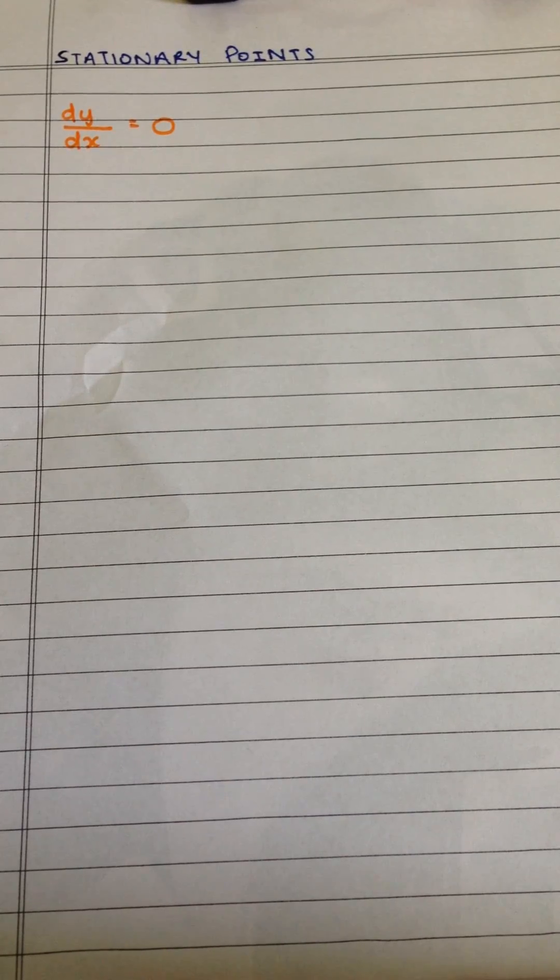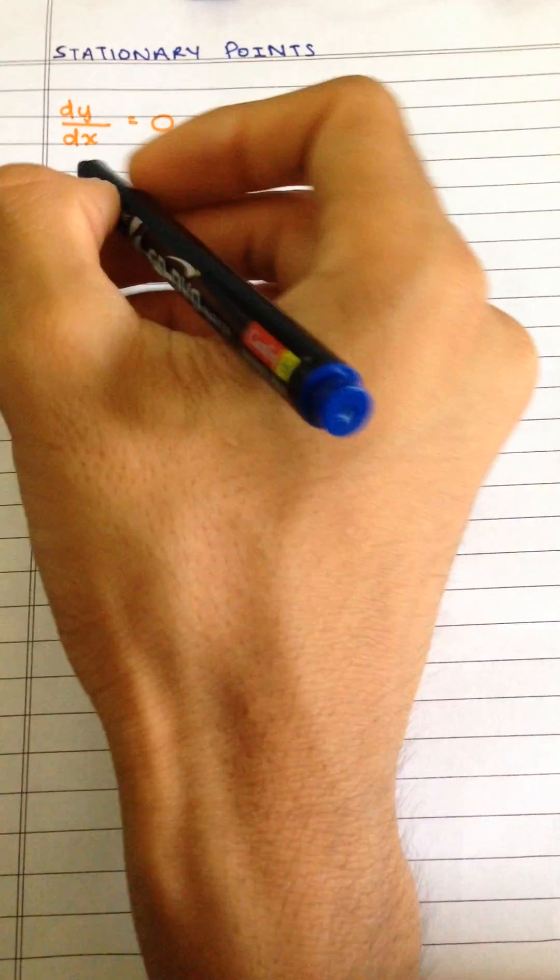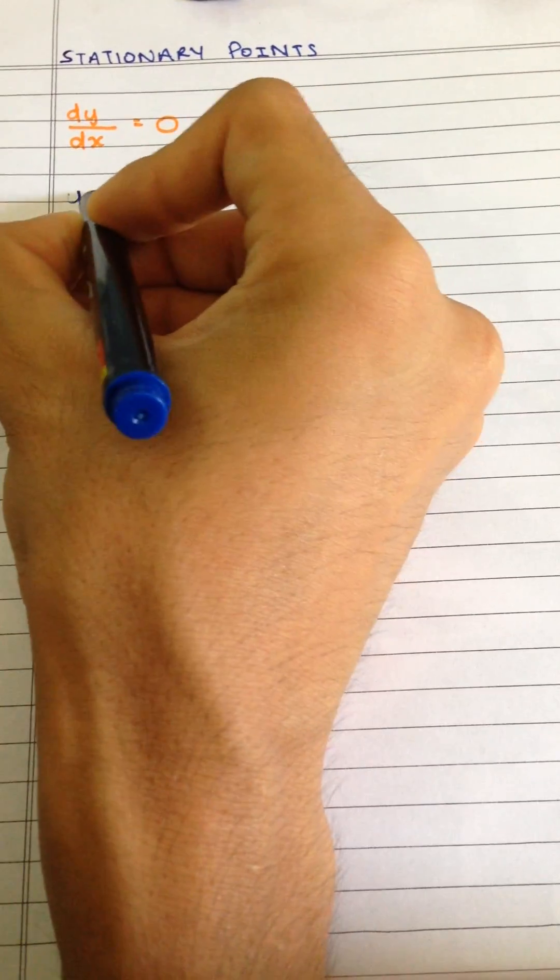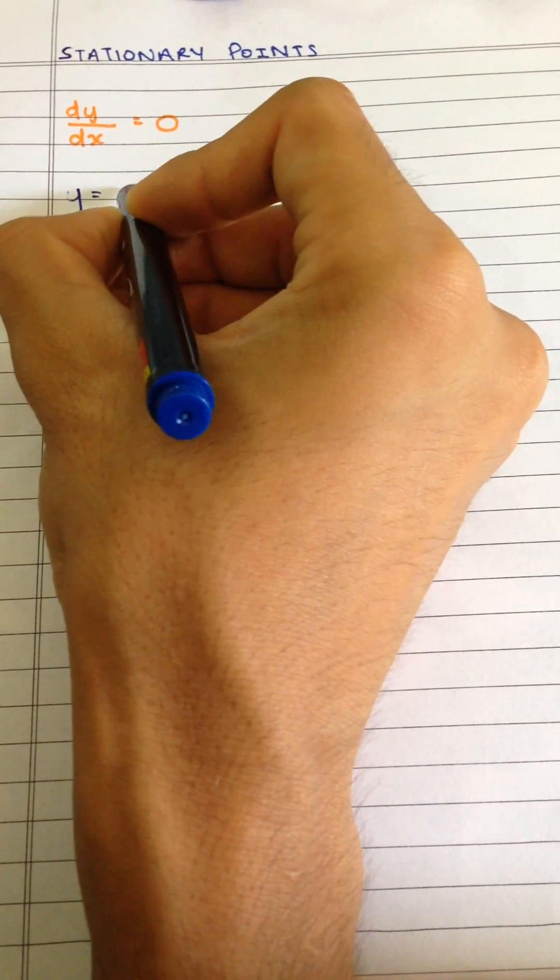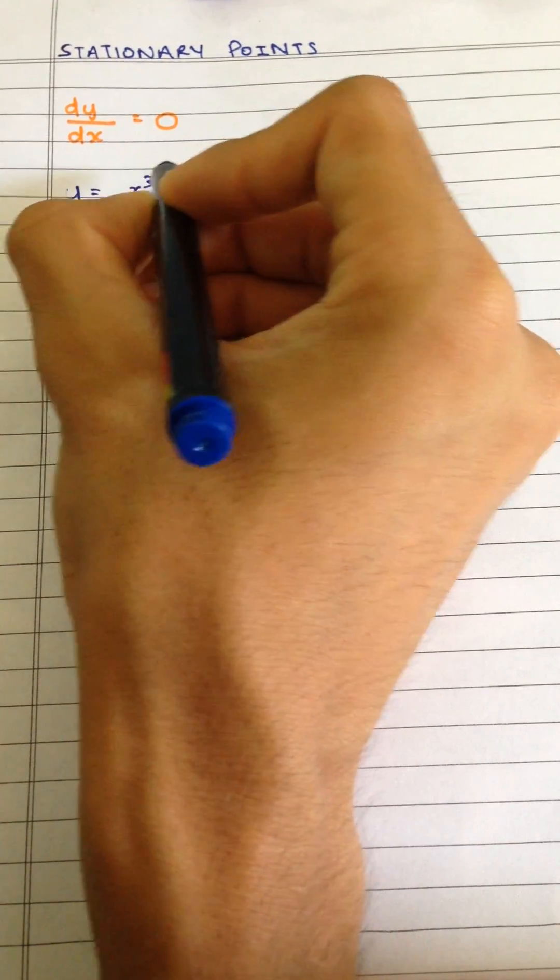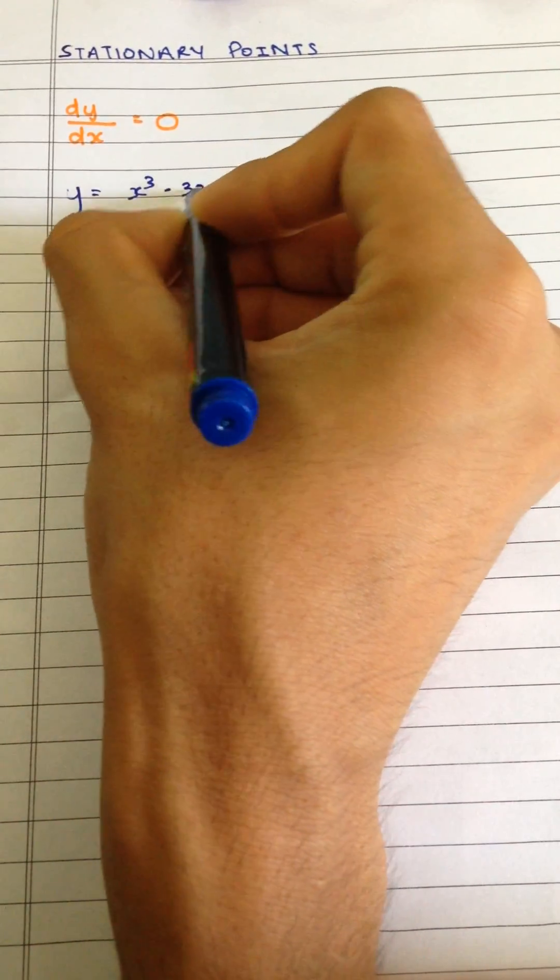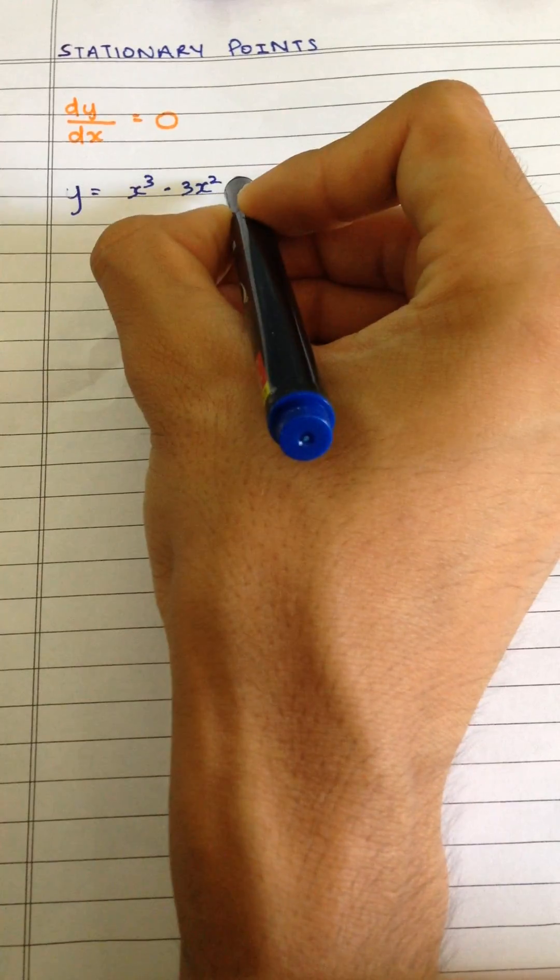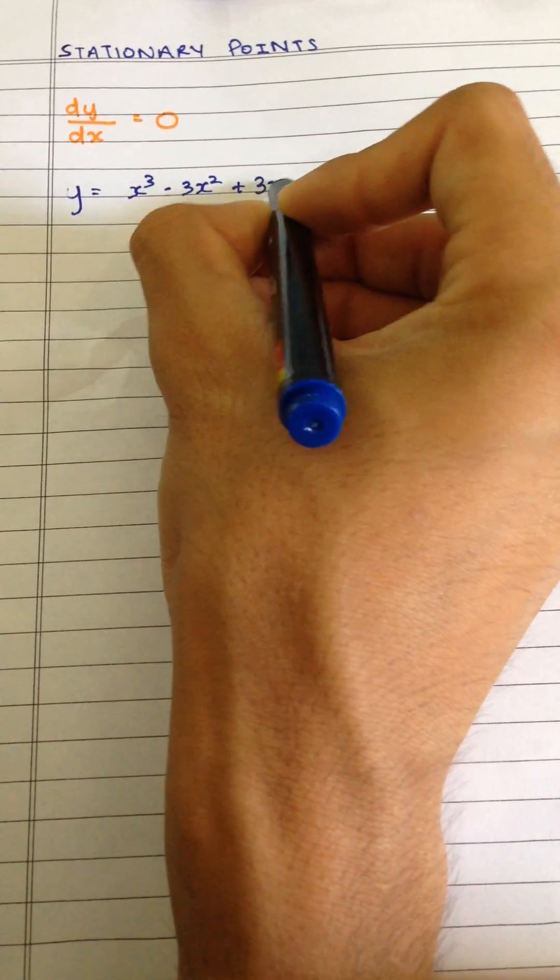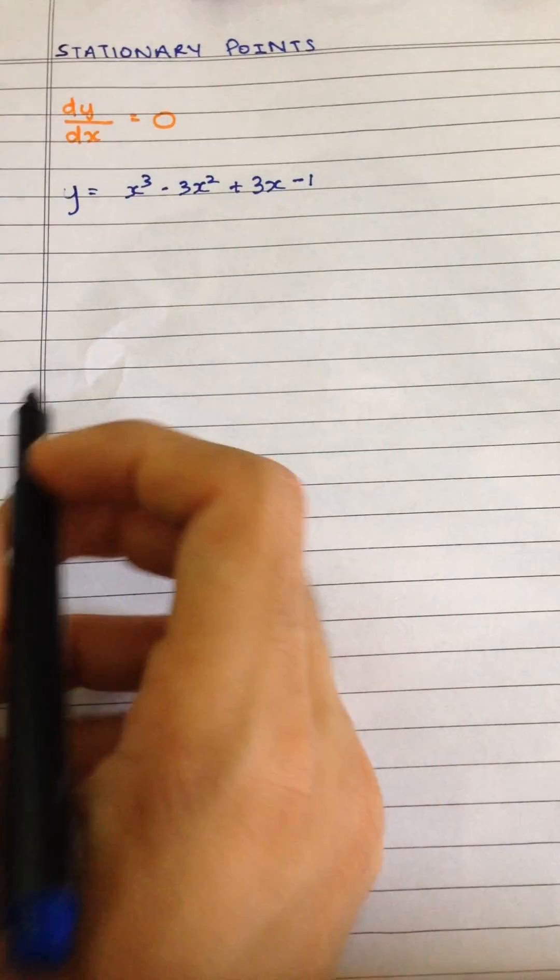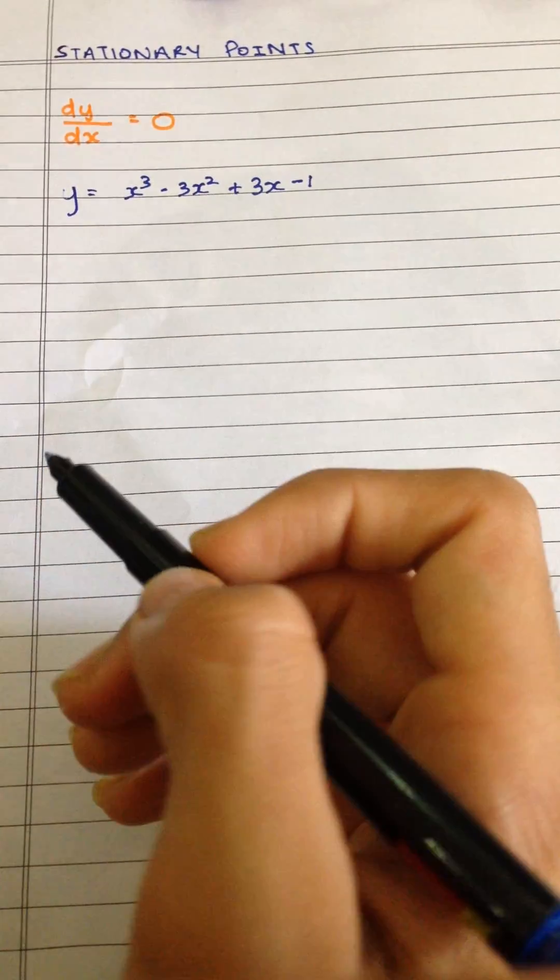So let's go through an example to make things clear. So if you have the curve y is equal to x cubed minus 3x squared plus 3x minus 1. So this is a curve and we are going to find the stationary points.